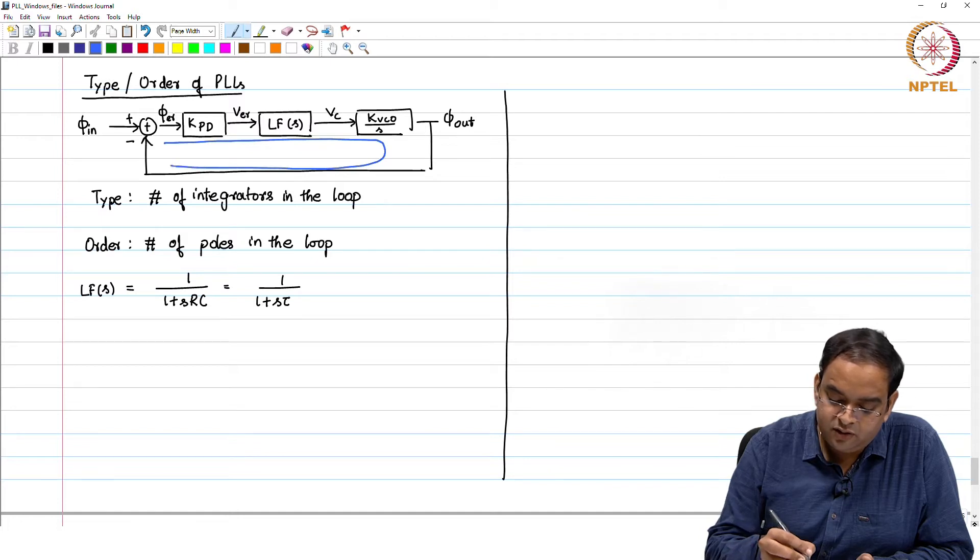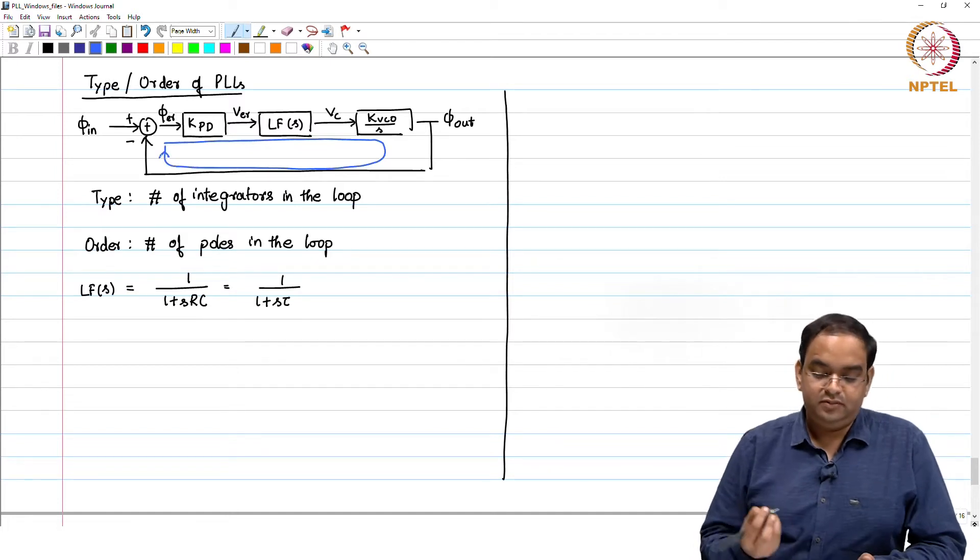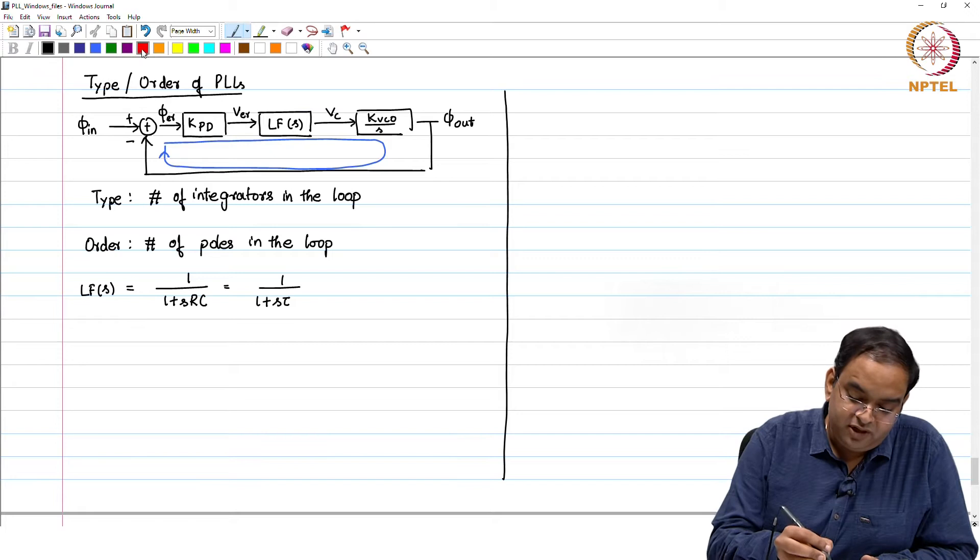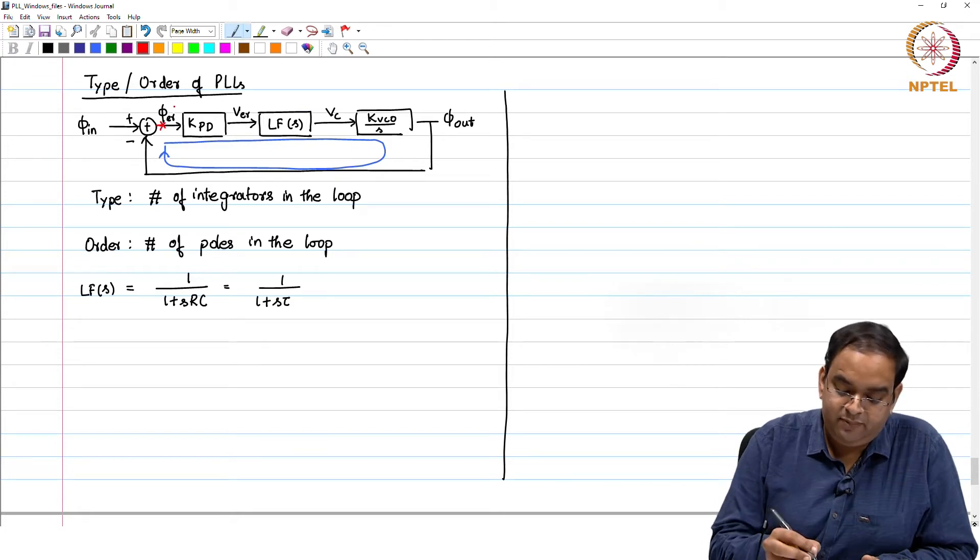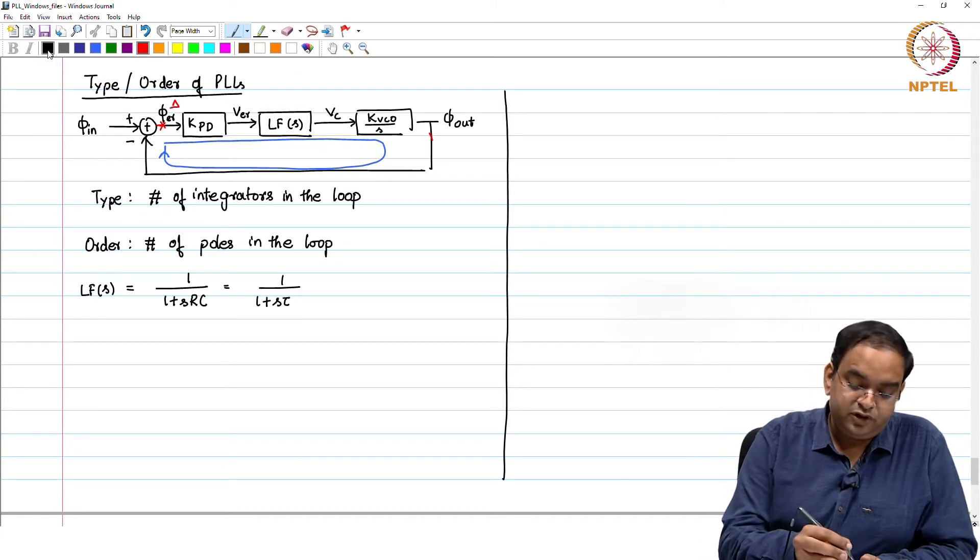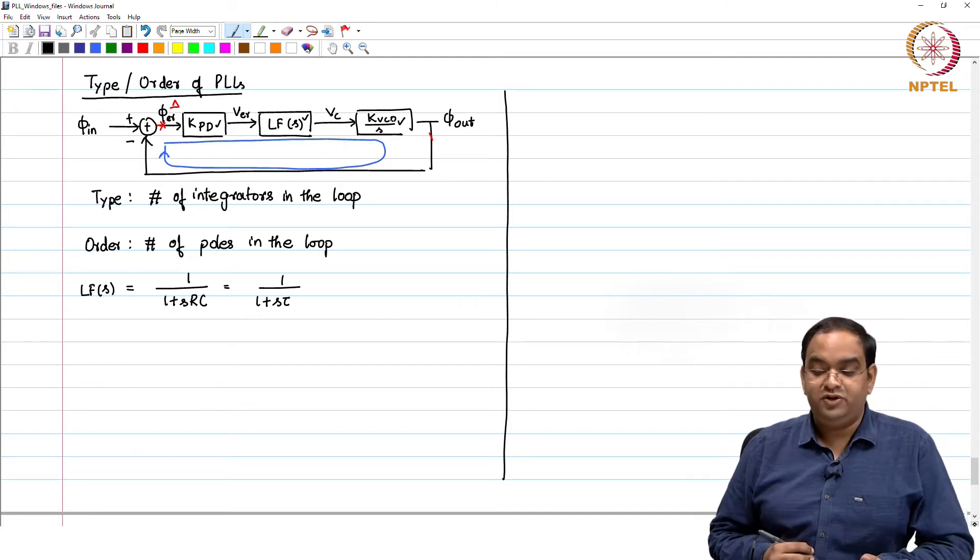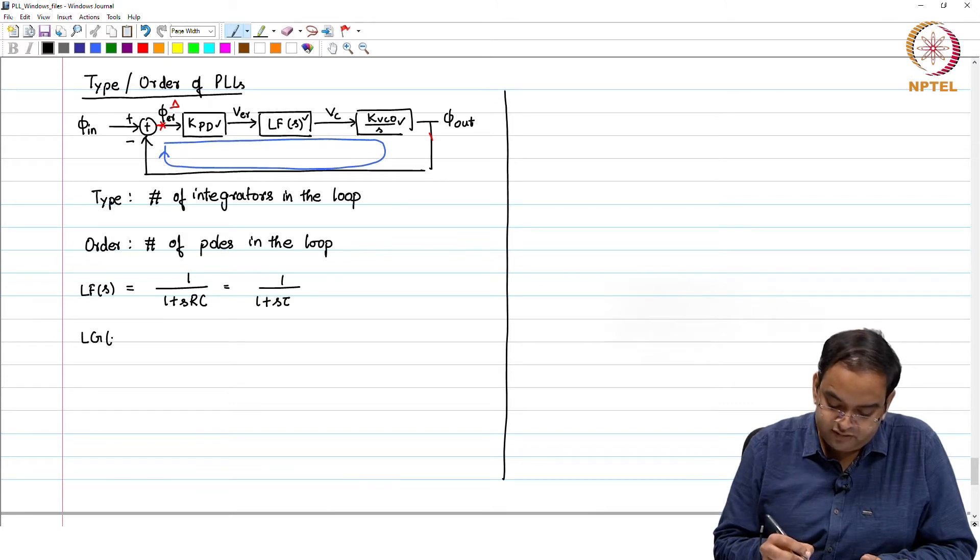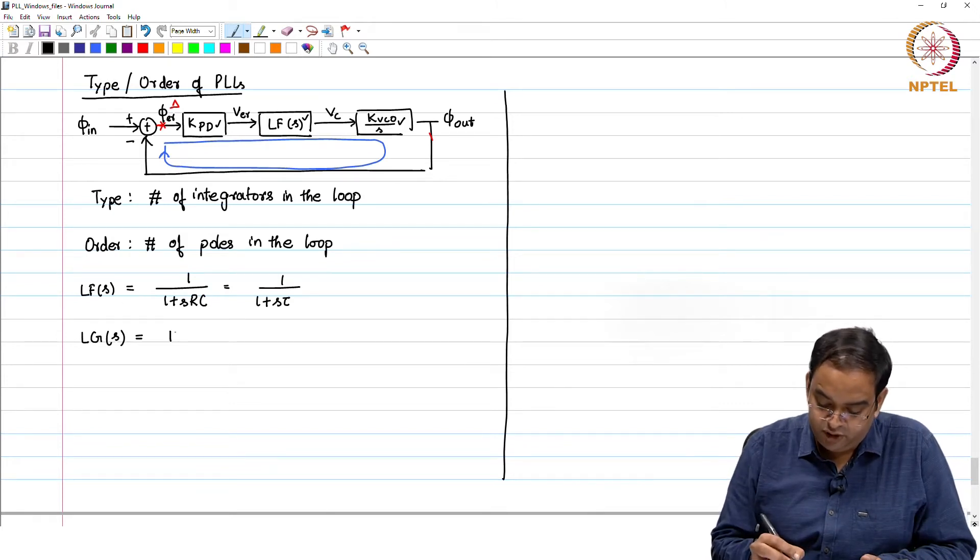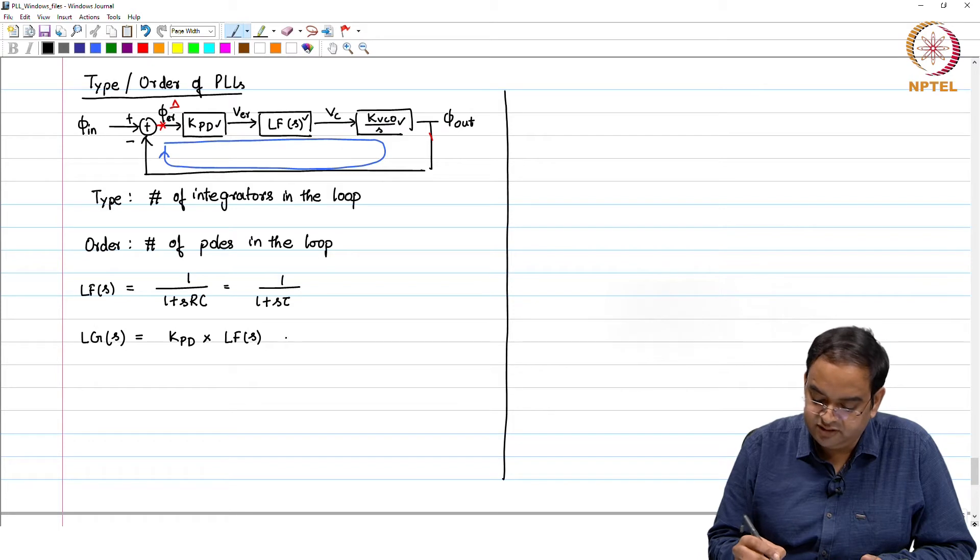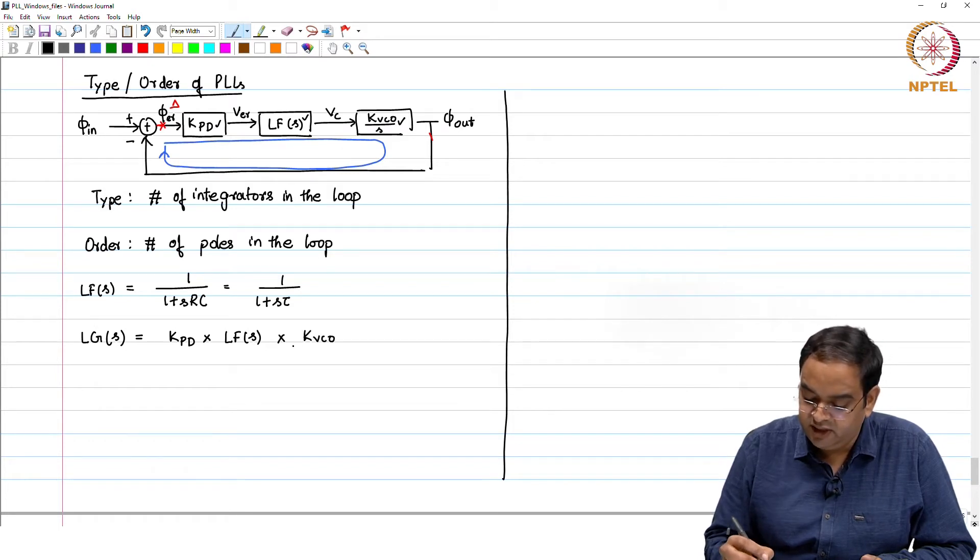What is the loop gain? The gain through the loop. Technically, whenever we want to find the loop gain, we will break the loop somewhere, apply a change like delta and see what comes back. Here if I break the loop here apply delta, delta will get multiplied by kpd then by loop filter of S and then by kvco over S. So the loop gain of this particular PLL is equal to kpd, which is the phase error detector gain, times loop filter of S into kvco over S.